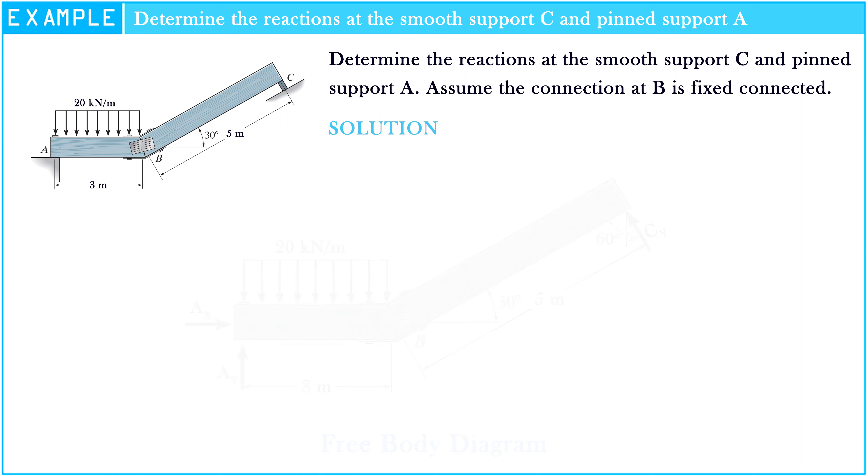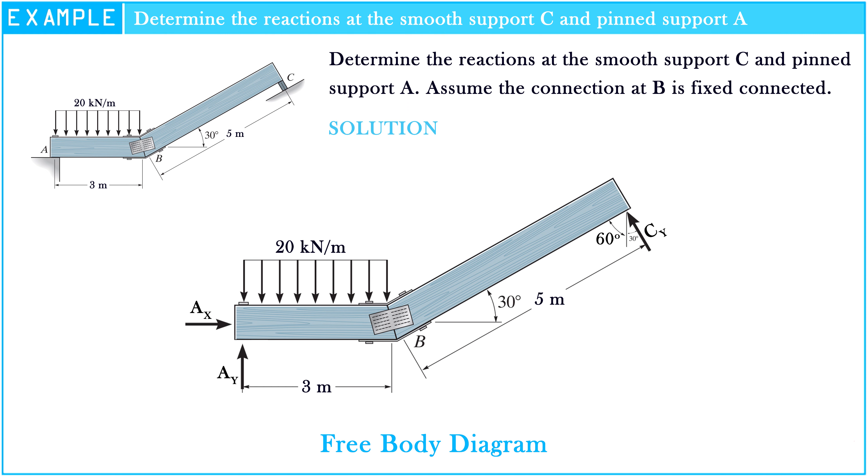First of all, let's draw the free body diagram of the beam. We see that at pin support A, there are two unknowns, AX and AY, and smooth support C has one unknown, CY.